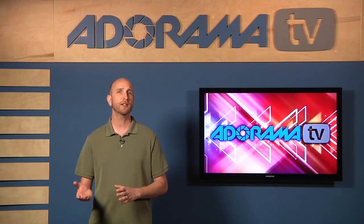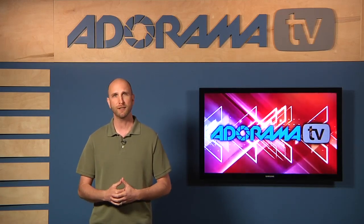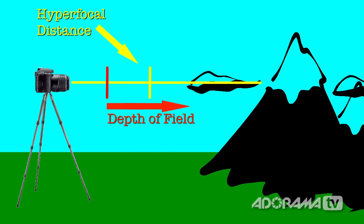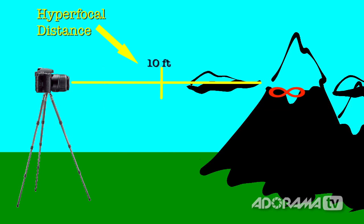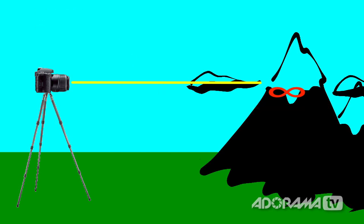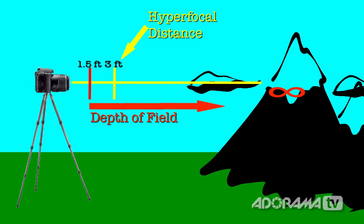Let's take a closer look at the definition of hyperfocal distance. When you focus your lens at the hyperfocal distance, the depth of field extends from half the hyperfocal distance to infinity. If our hyperfocal distance was 10 feet, we'd focus our lens at 10 feet, and our depth of field would extend from 5 feet — half the hyperfocal distance — all the way to infinity. If our hyperfocal distance was 3 feet, we'd focus our lens at 3 feet, and our depth of field would extend from 1.5 feet all the way to infinity.